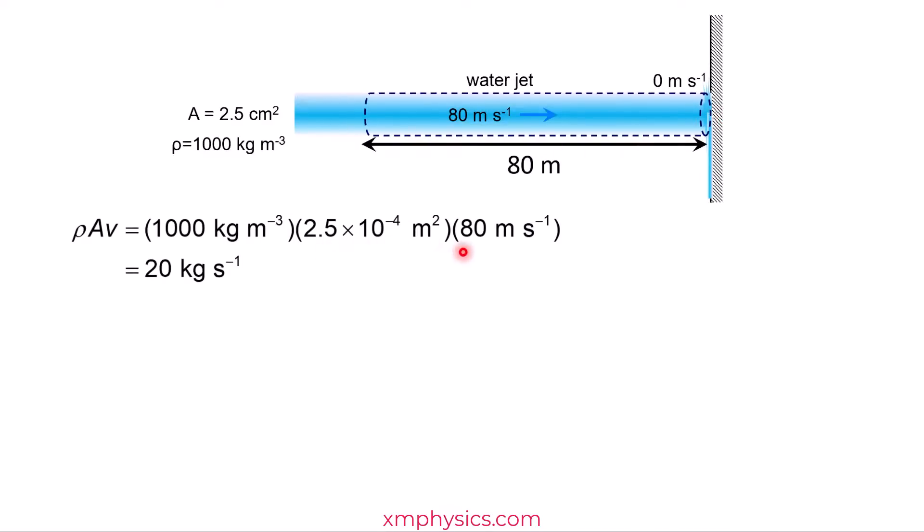So if I take 2.5 times 80 meters per second, what I get is the volume per second hitting the wall. So if I take the volume per second and multiply it with the density, what I get is the kilogram per second. So every kilogram of water that hits the wall loses 80 meters per second of velocity. But there are 20 kilograms of them hitting the wall every second. So look at the calculation here. When I take 20 multiplied by 80, what I get is the force exerted by the wall on the water to destroy all this momentum. That's the rate at which momentum is being destroyed here.